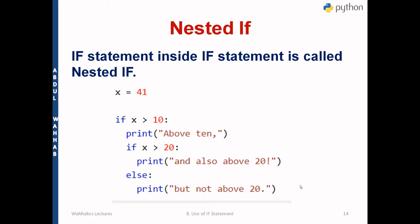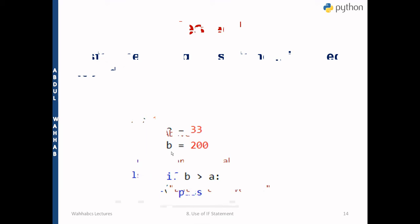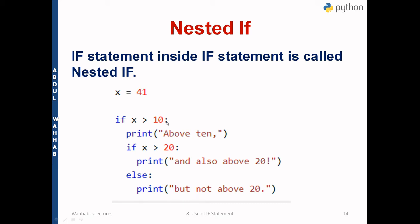Nested if means using one if condition inside another. For example, x is equal to 41. If x is greater than 10, we print 'above 10', and within that same block we check again: if x is greater than 20, we print another message. This is called nesting — using an if inside an if.